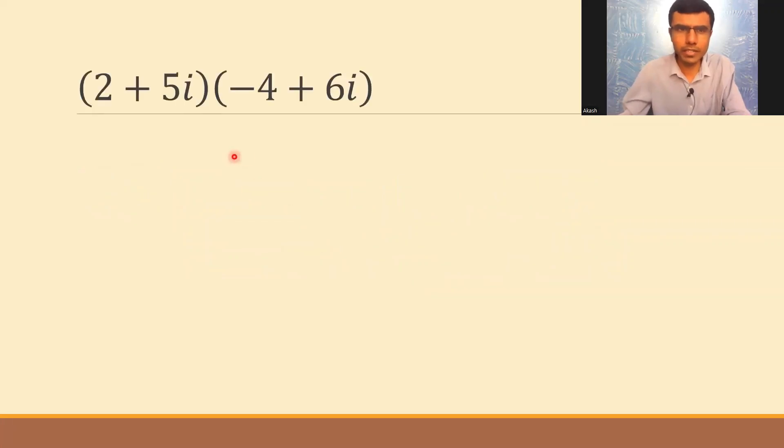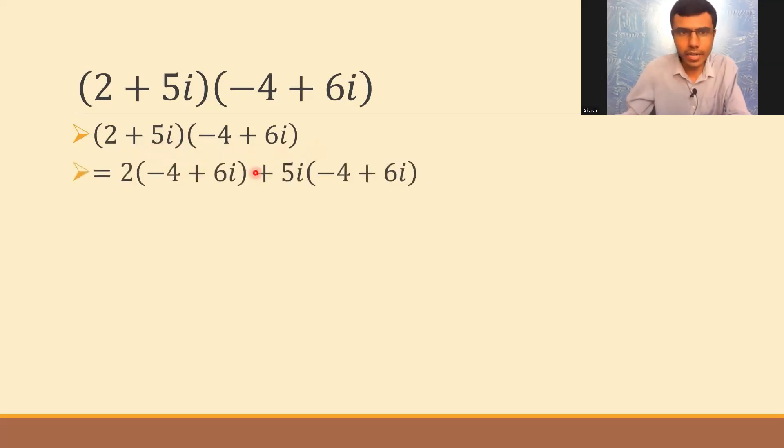So very basic simplification. Here this can be written as very basic expansion. 2 into second bracket plus 5i into second bracket. 2 into minus 4 is minus 8 and 2 into 6i is 12i and 5i into minus 4 is minus 20i and 5 into 6 is 30 and i into i is i². So this is what I have now.